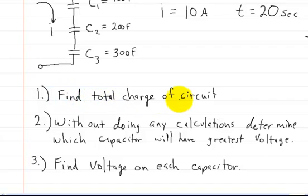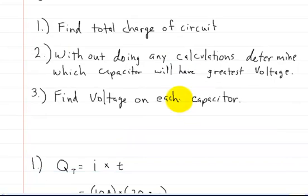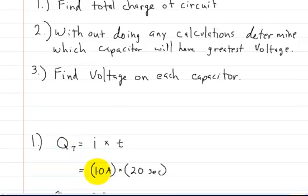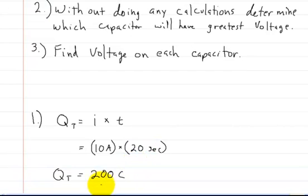The first problem: find the total charge of the circuit. The total charge equals current multiplied by time. Since the current is 10 amps, we multiply by 20 seconds to get a total charge of 200 coulombs. That's how you do the first one.